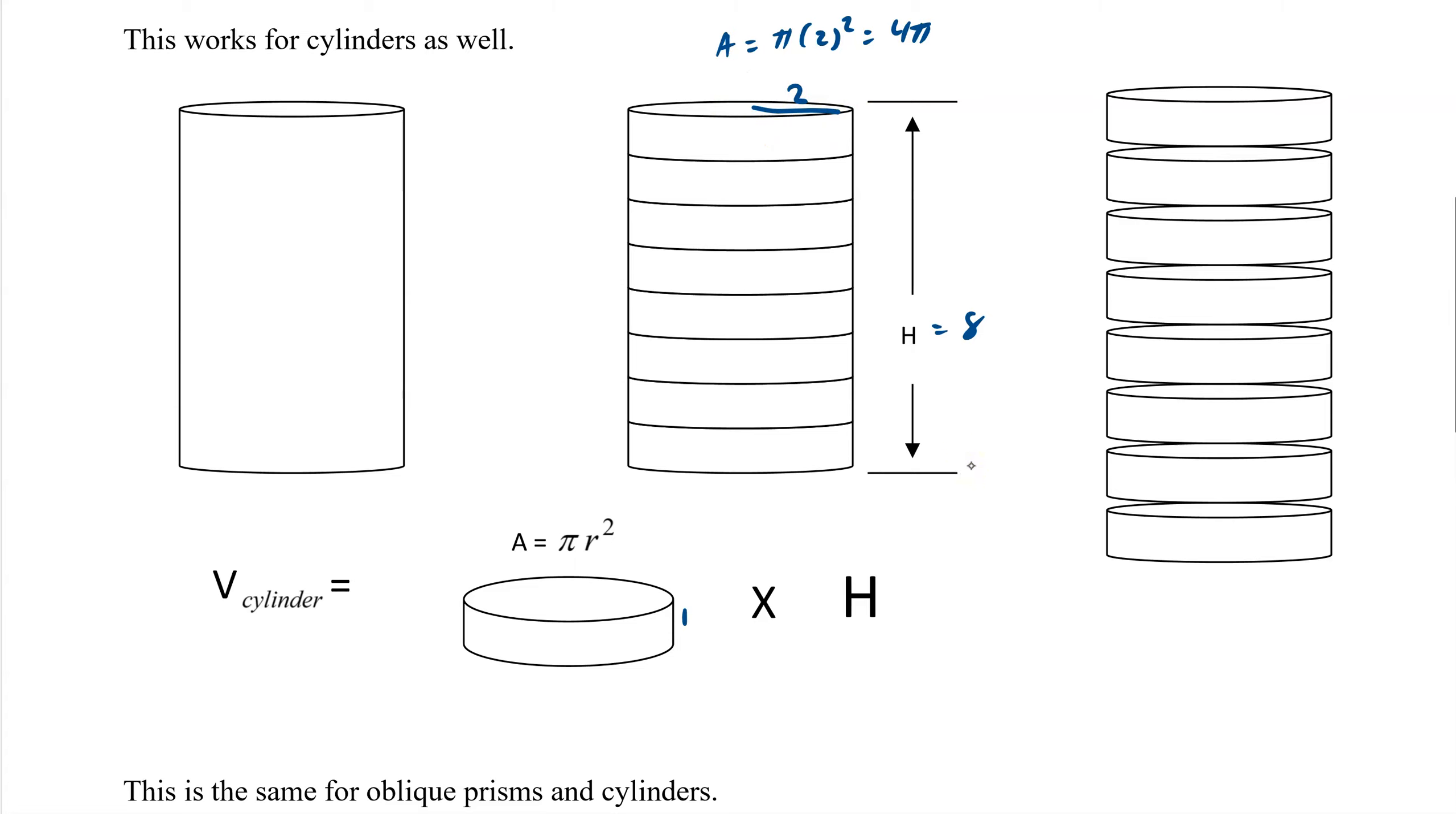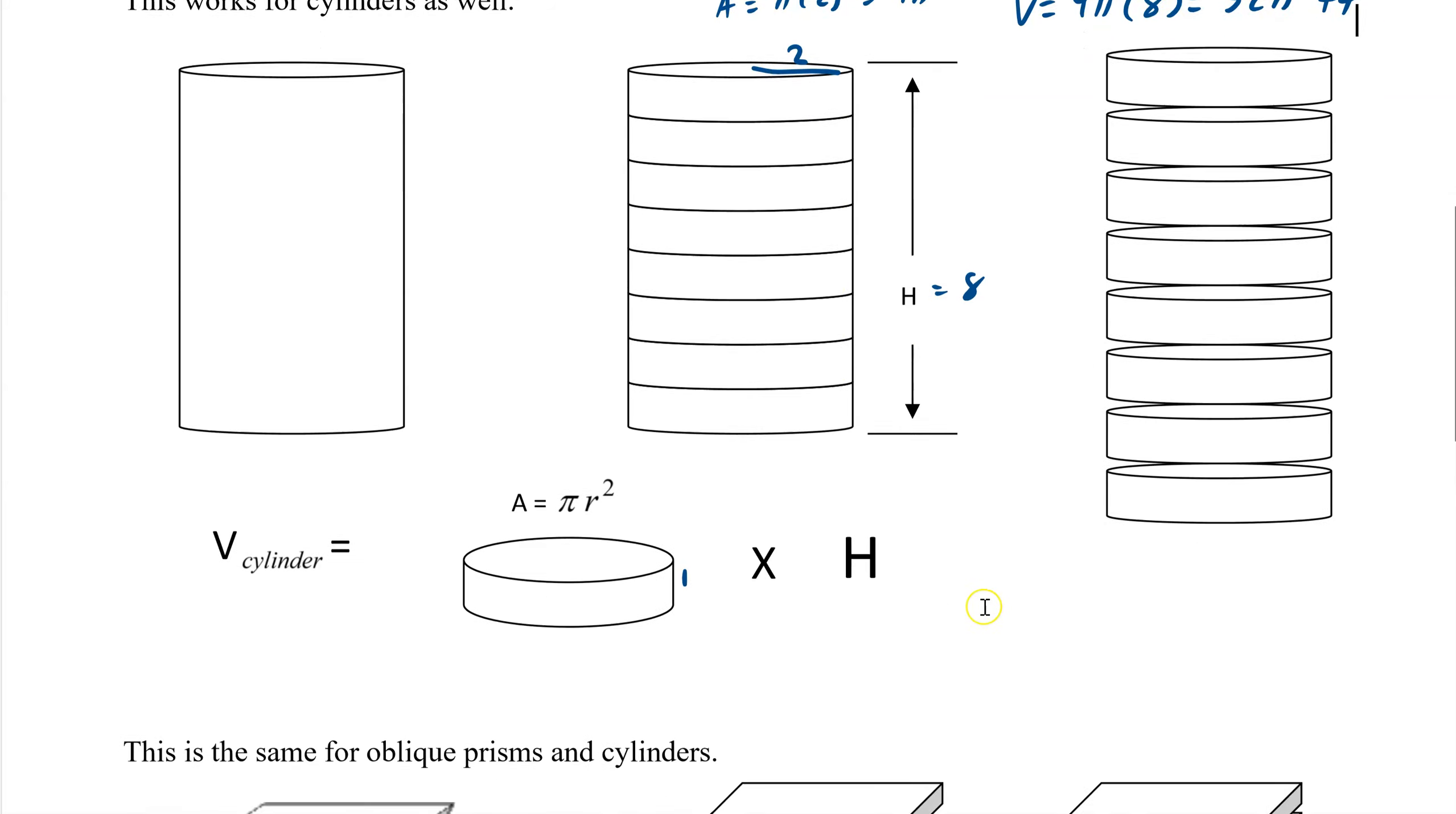So no matter what, it just becomes our volume is our base times our height, which becomes 32π. And then it would be cubic feet if we're talking about feet. If it's meters, it's cubic meters. So it's always just find the area of the base and then count how many you have. That's what the height represents.